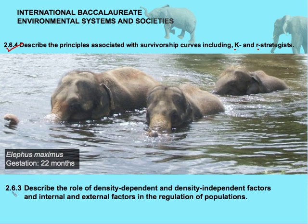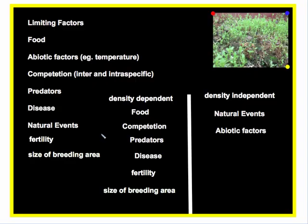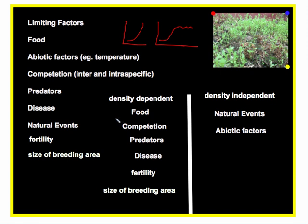First, we would like to look at 2.6.3 and try as much as possible to make connections between the role of density-dependent and density-independent factors, and internal and external factors, in the regulation of the population. The factors that limit population growth — the factors that determine whether a population has a J-shaped or an S-shaped curve — are these limiting factors.